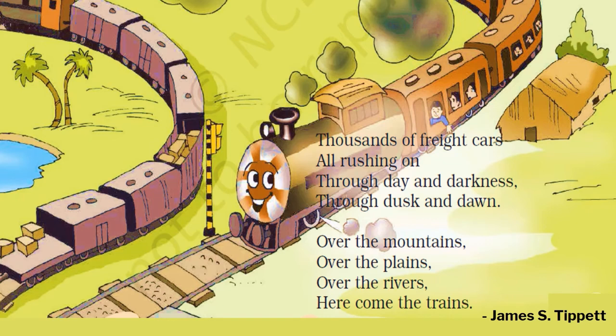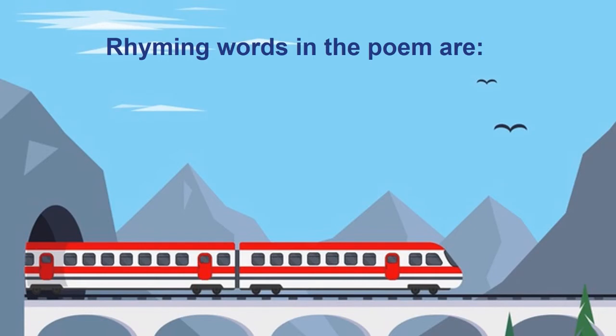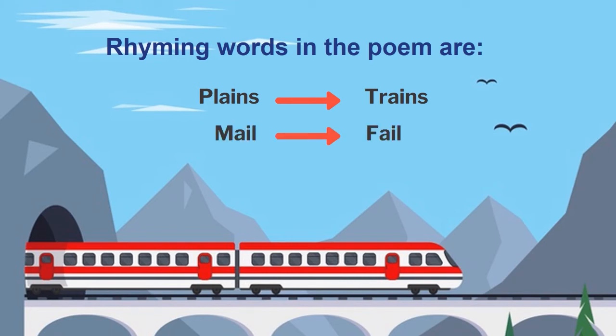Yeh kavita hai James S. Tippett dwara likhit. We have come across some rhyming words in this poem. Let's see what they are: plains and trains, mail and fail, on and dawn.